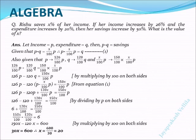Next, all the terms have p, so that can be cancelled by dividing by p on both sides. So 126 minus 120 plus 120x by 100 equal to 150x by 100.